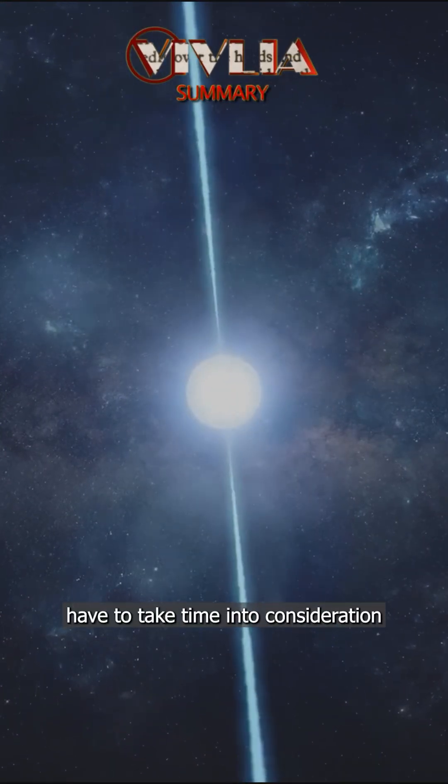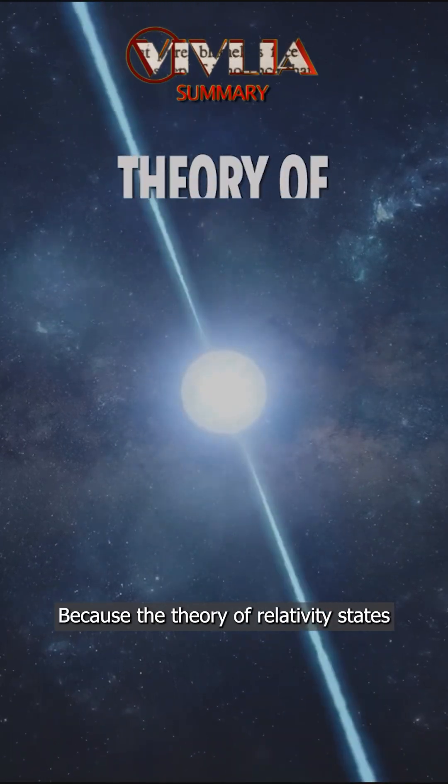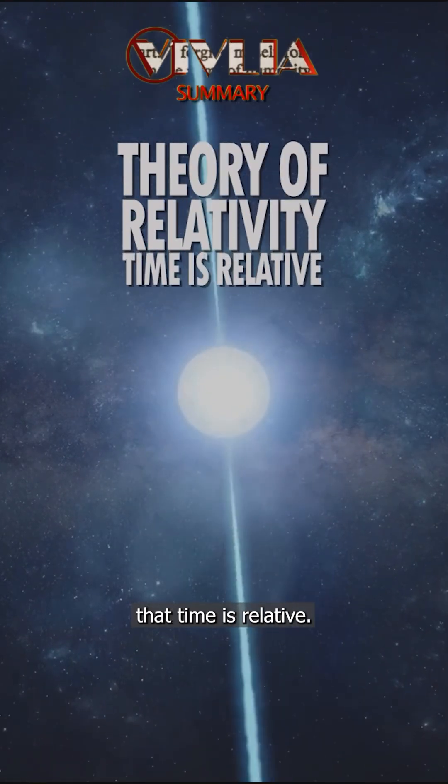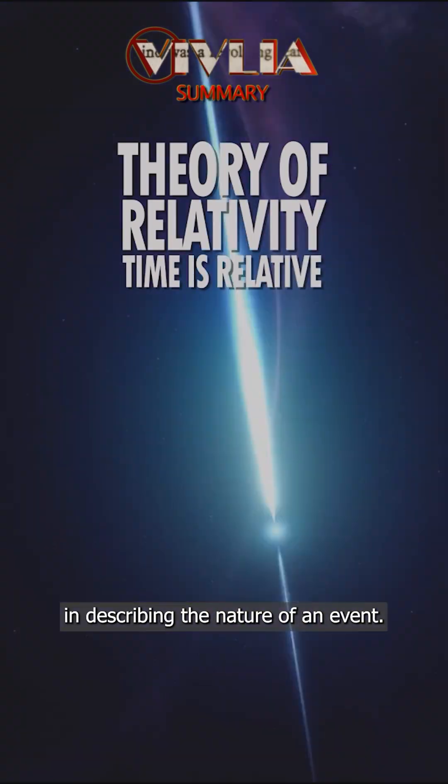Scientists have to take time into consideration when determining the position of an event because the theory of relativity states that time is relative. It is therefore an important factor in describing the nature of an event.